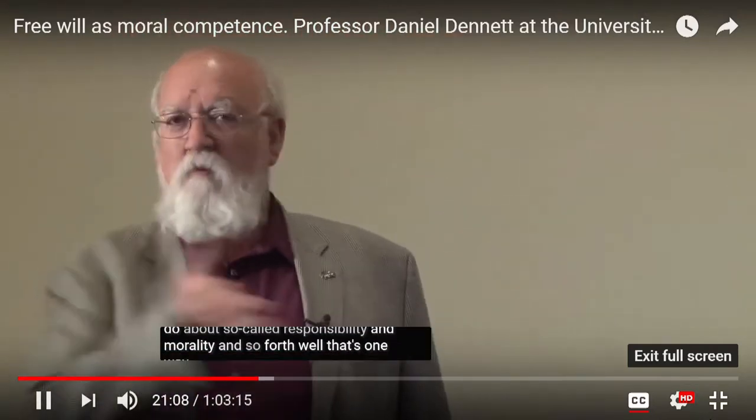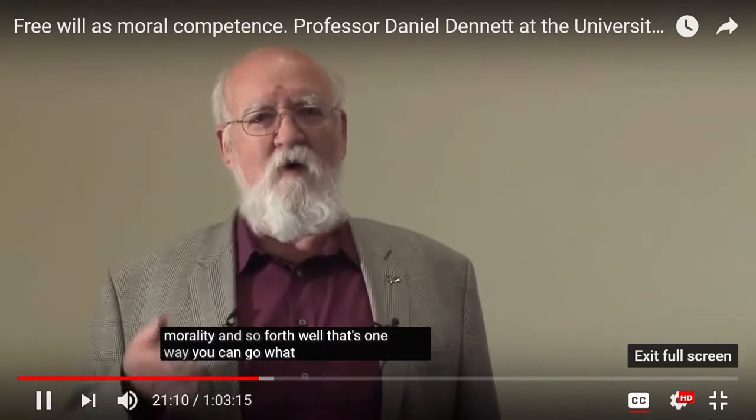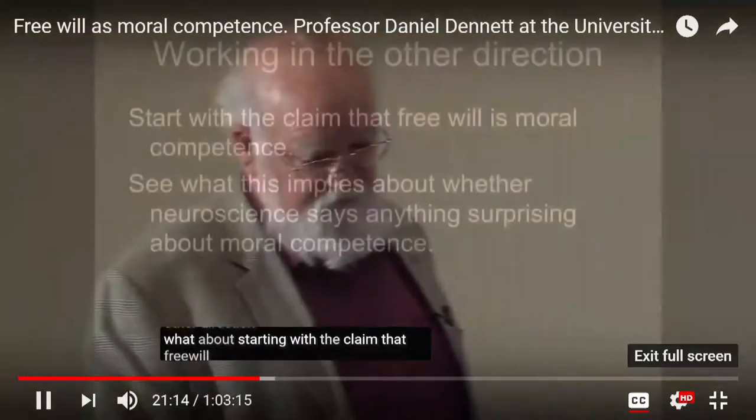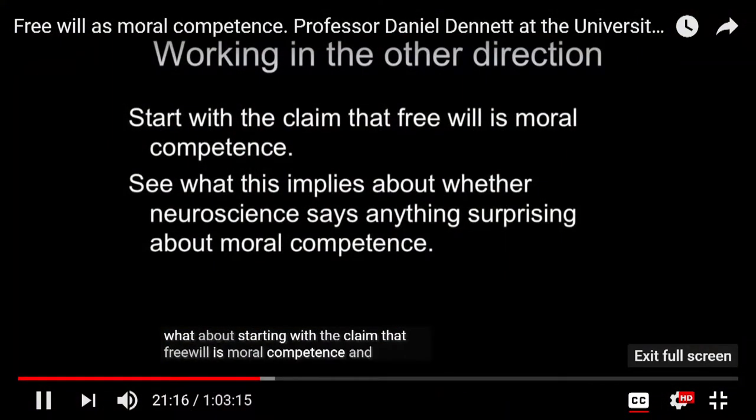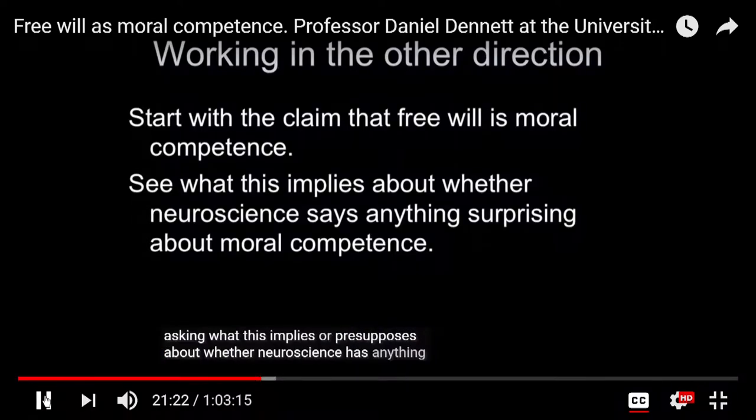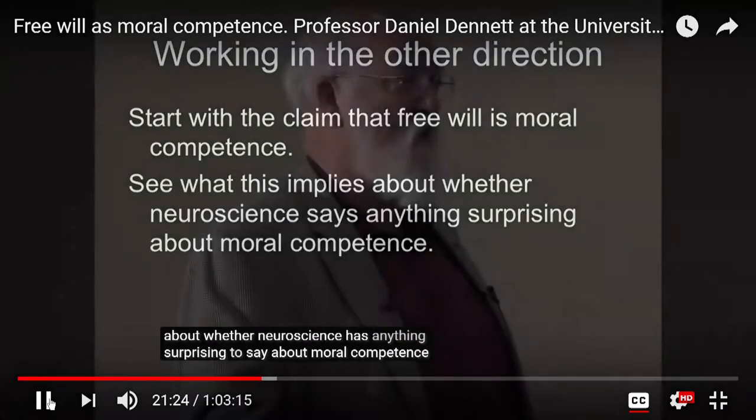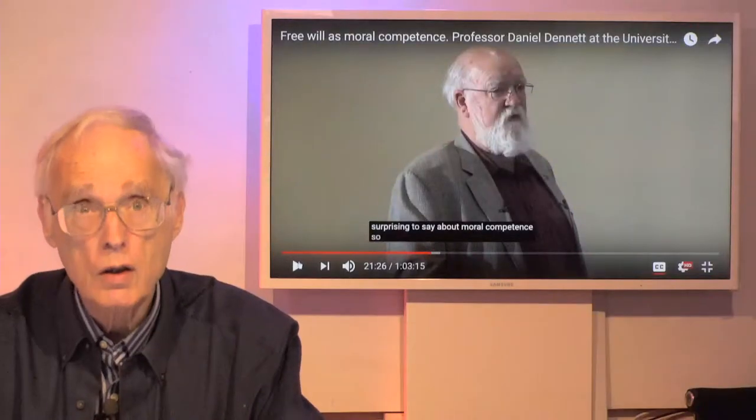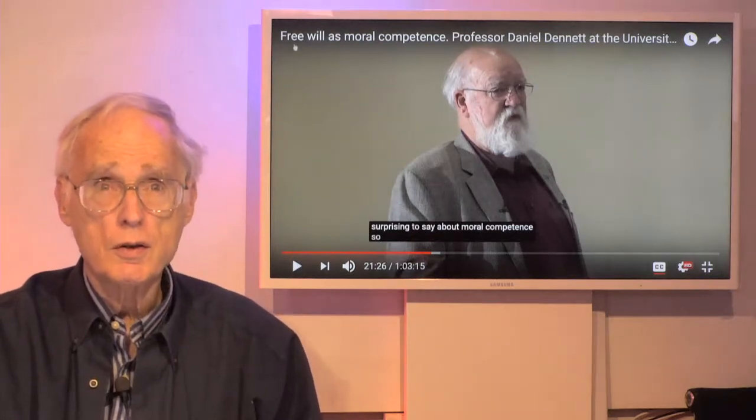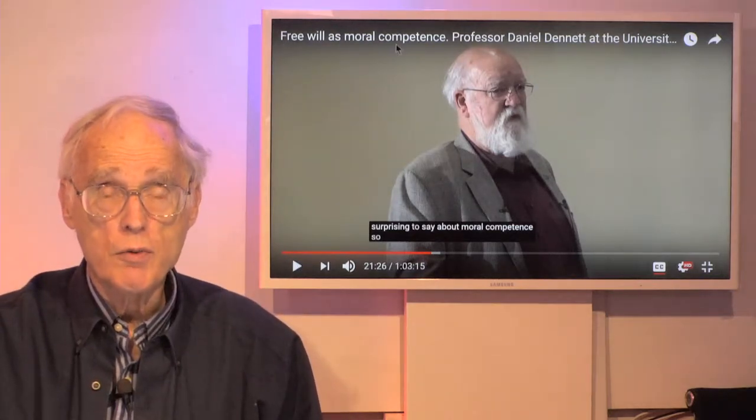That's the conclusion that people are rushing to draw, and then they're busy telling us what adjustments to our laws and to our mores, to our customs we're going to have to do now that science has shown. Thanks to neuroscience, we've shown that people don't really have free will, and they can't really be responsible. Then they make a sort of half-hearted stab at saving some sort of hopeful line on morality. That is, having declared and gotten a lot of eyeballs in their direction, free will is an illusion. Wow. Then they say, and let us tell you how society is going to get along without free will, and what we're going to do about so-called responsibility and morality and so forth. Well, that's one way you can go. What about working in the other direction? What about starting with the claim that free will is moral competence, and then asking what this implies, or presupposes, about whether neuroscience has anything surprising to say about moral competence?